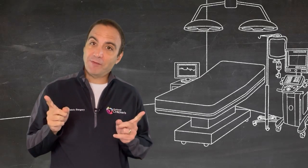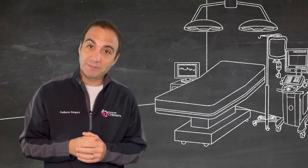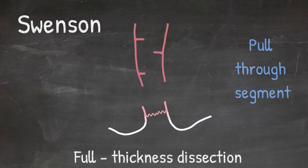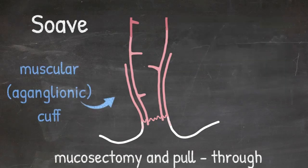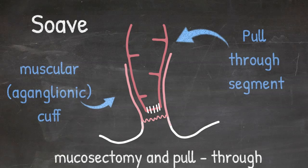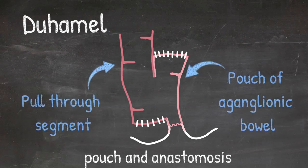Where they differentiate from each other is how much rectal dissection is performed and how the anastomosis is performed. We have the Swenson technique, which is a full thickness dissection and anastomosis. There's the Soave procedure, which is a mucosectomy. You leave a cuff of aganglionic bowel and bring the ganglionated bowel through that cuff of rectum and perform your anastomosis. And then there's the Duhamel procedure, which is performing a pouch with an anastomosis of aganglionic and ganglionated bowel.